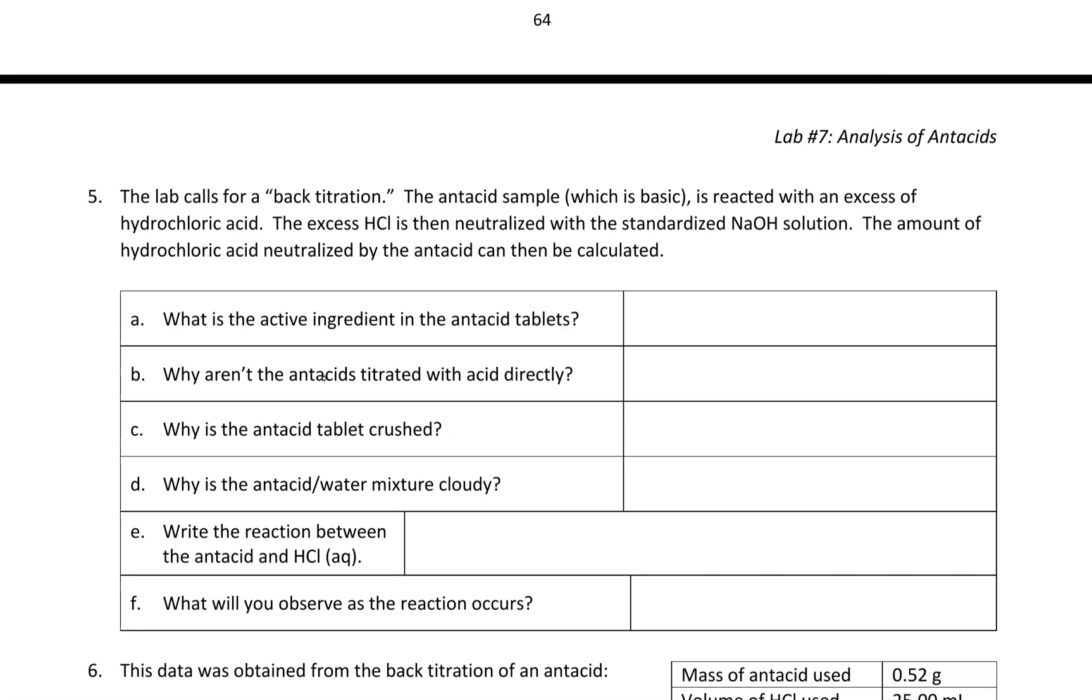The active ingredient in an antacid tablet, at least the ones we're going to be using, is calcium carbonate, CaCO3. Calcium carbonate is going to be a basic substance. If we kind of backtrack to the acid and base that could have combined to form this, we'd have calcium hydroxide, a strong base, and carbonic acid, H2CO3, a weak acid. So if I'm just to dissolve calcium carbonate in water and take the pH of that solution, it's going to be basic.